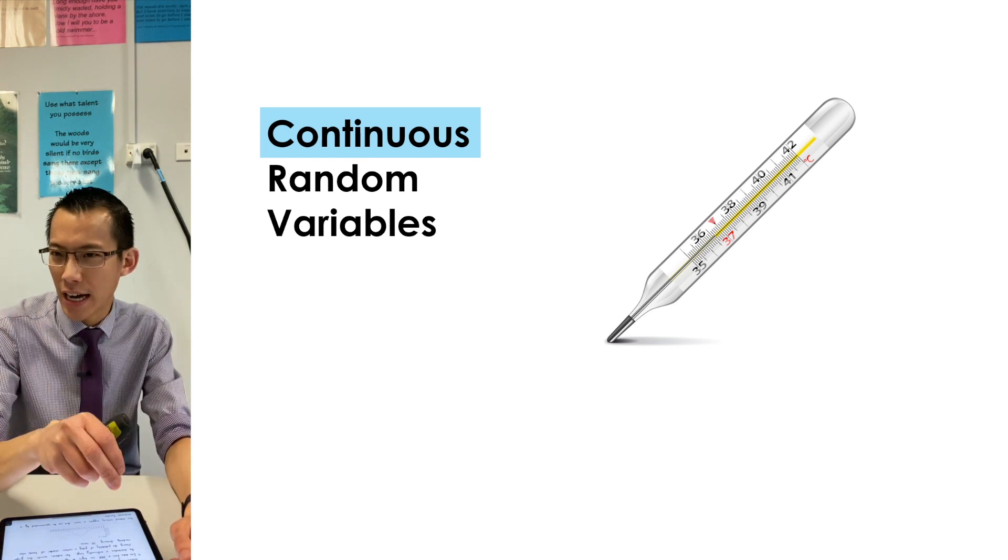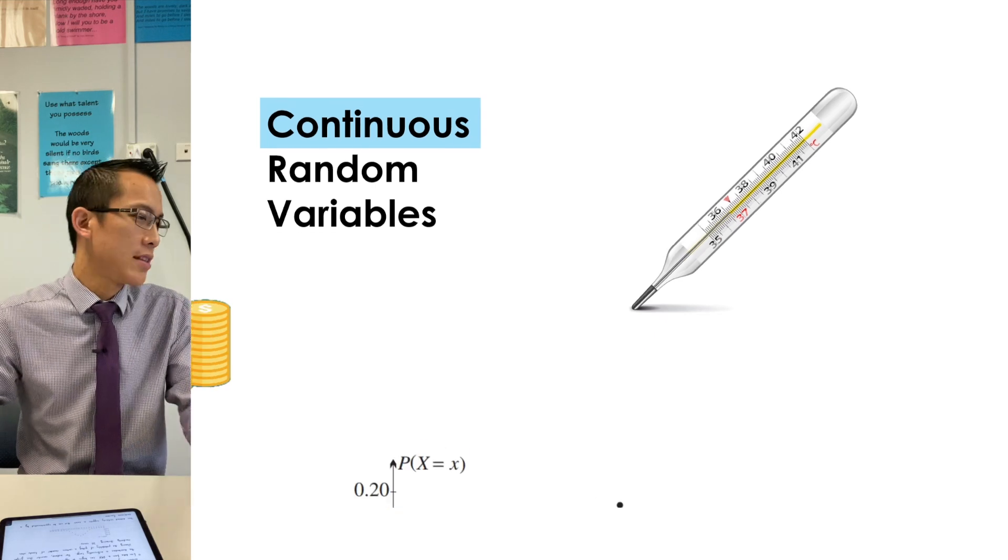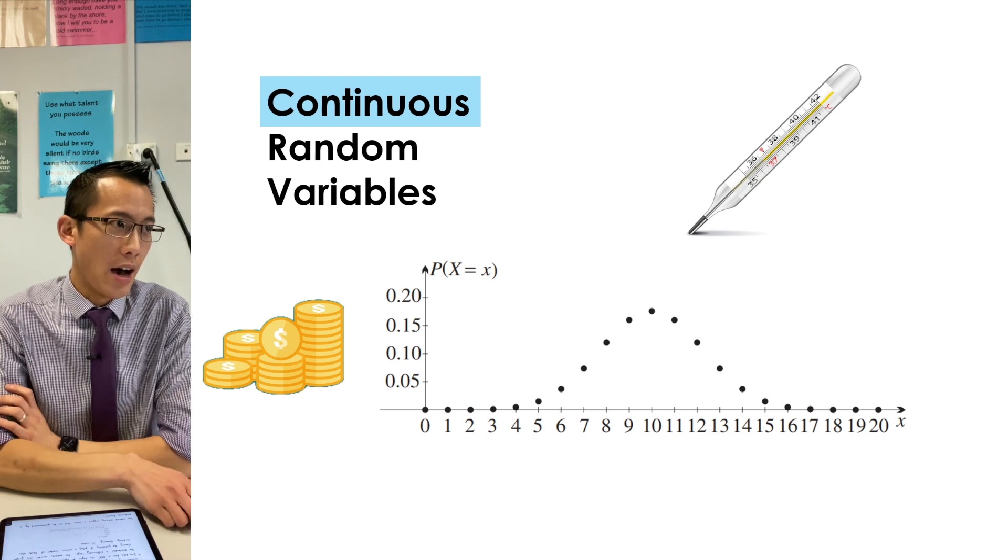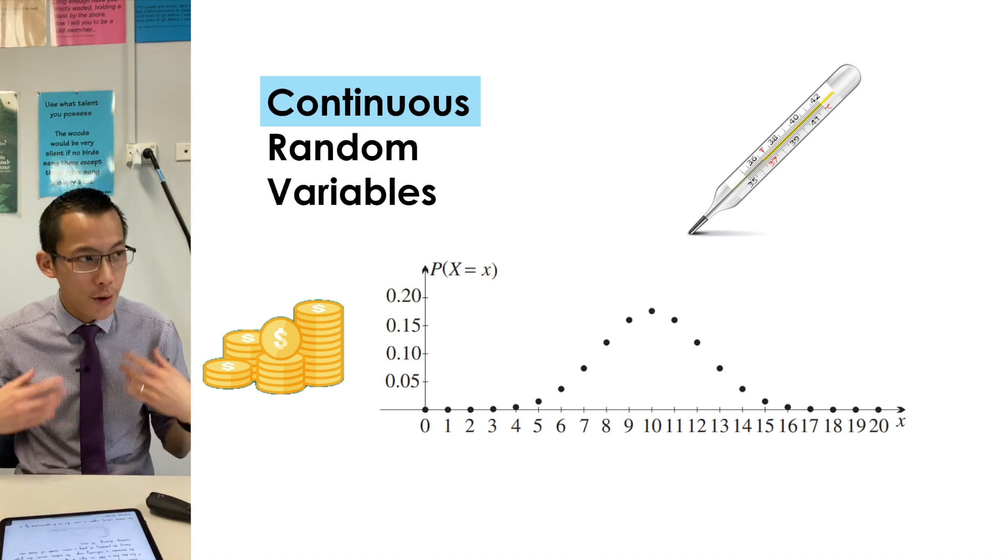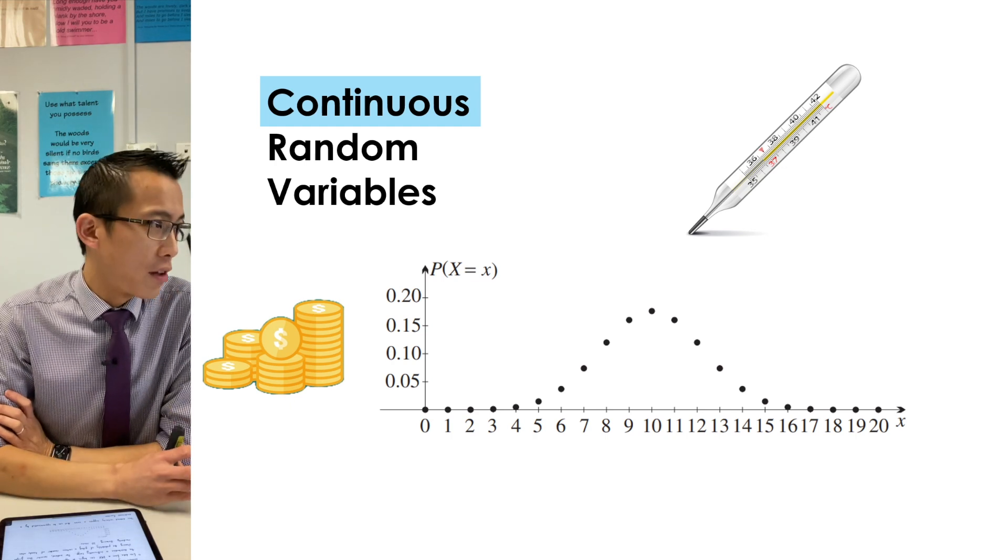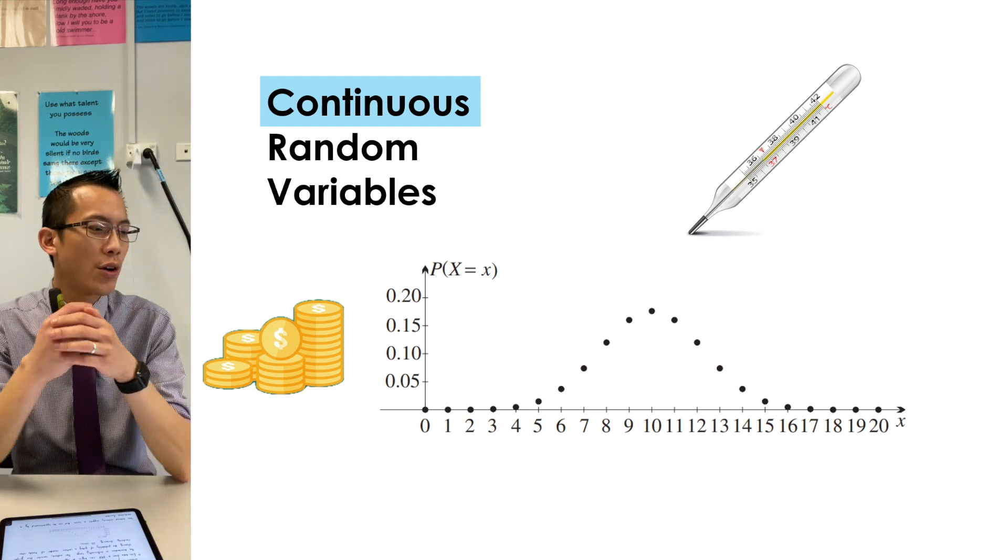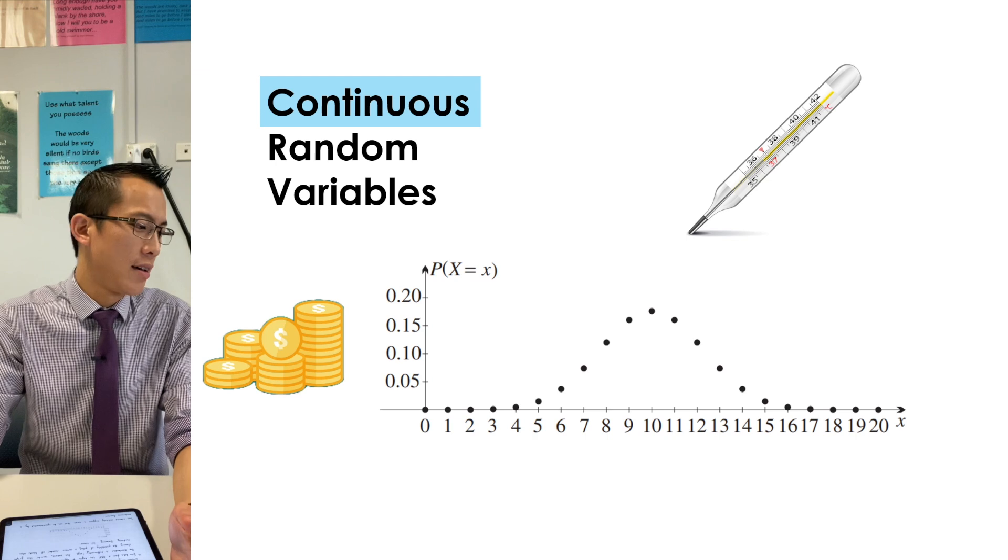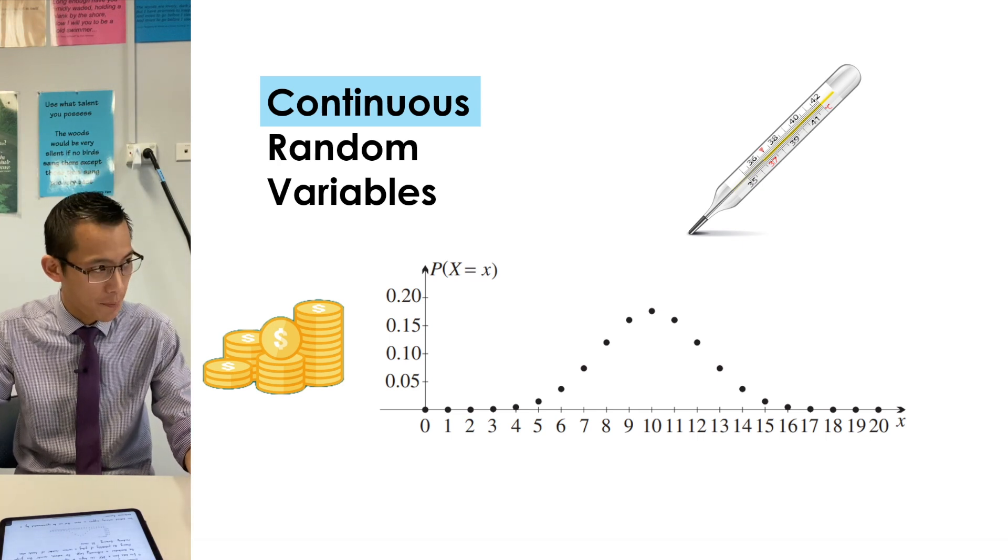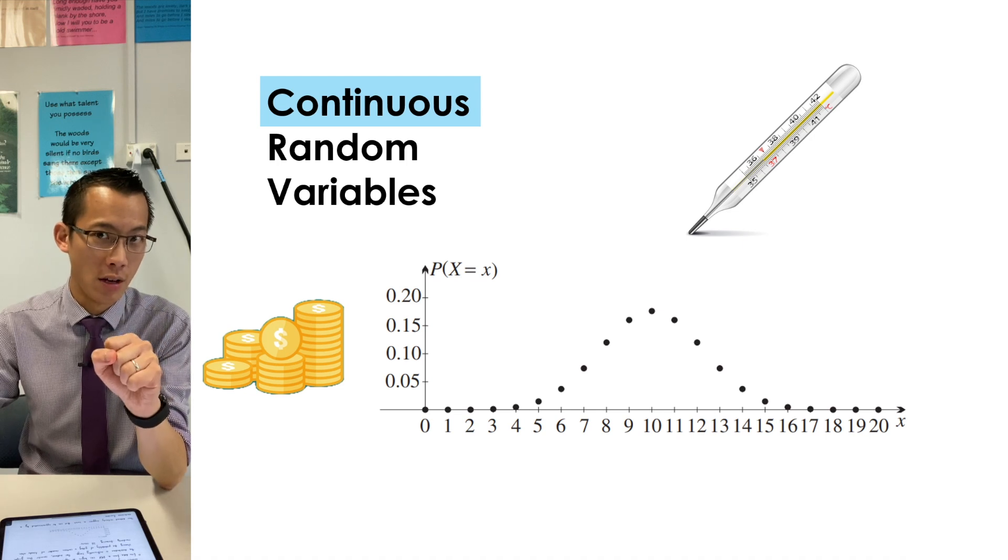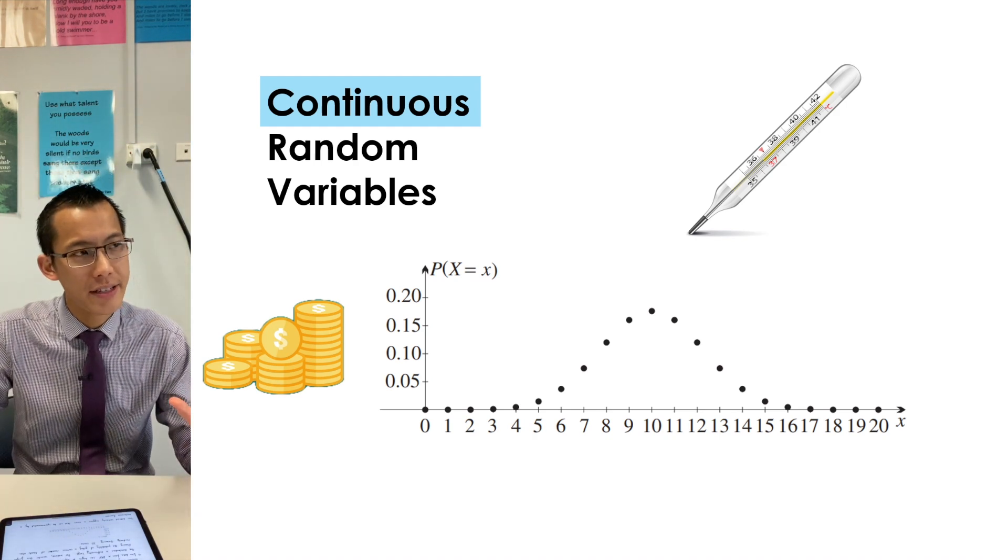So if you've got continuous data, then you would use continuous random variables to represent that. But here's the kicker. Even when you've got a discrete set of data, discrete distribution, even that sometimes can be helpfully understood using a continuous model. So here's an example for you. If you took 20 coins and just sort of spilled them out onto the table, and then you counted how many were heads and how many were tails. And then you repeated that experiment over and over again, then you would get data that looks something like this. You're looking at a plot that gives you the relative frequency. You can see the vertical axis. It's P of X equals X. So that's a probability. So however many number of experiments you do, you divide by that number of experiments. How many times did you get seven heads out of 20? How many times did you get 11 heads out of 20?